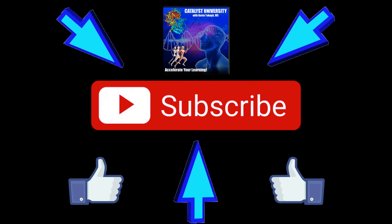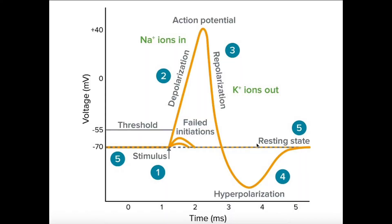Welcome back to Anatomy & Physiology on Catalyst University. My name is Kevin Tokov. In this video, we're going to talk about the action potential and how it propagates down the axon. We're not going to talk about decremental conduction or the myelin sheaths — we're really just going to get the basic idea of what's happening in the action potential.